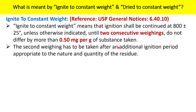The second weighing or subsequent weighing has to be taken after an additional ignition period appropriate to the nature and quantity of the residue. If the difference between two consecutive weighings is greater than 0.50 milligram, then only you have to go for further ignition — otherwise it is not necessary.